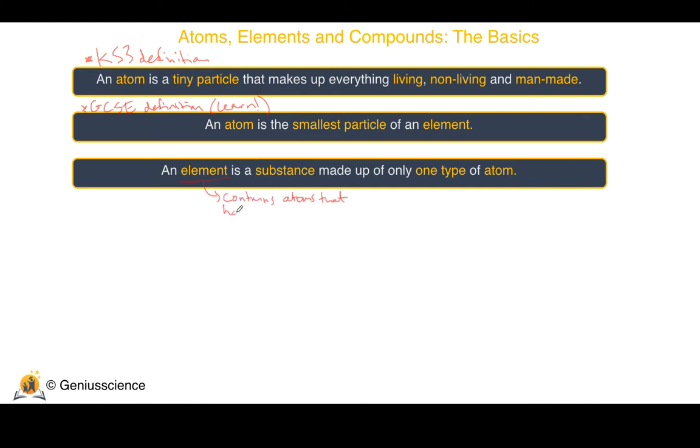This means that an element contains atoms that have the same number of protons in the nucleus. For example the element hydrogen is only made up of hydrogen atoms that each contain one proton. For more on this type of thing watch the video on the structure of atoms.